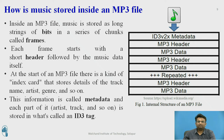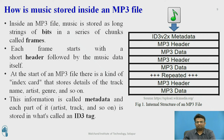How is MP3 music stored in a computer file? Inside the MP3 file, music is stored as a long string of bits — a series of chunks called frames. Each frame starts with a header followed by the music data itself. At the start of an MP3 file, there is an index card that stores track information details. This information is called metadata, and each part is stored in what is called an ID3 tag. The MP3 frame structure includes: metadata, MP3 header, and MP3 data.